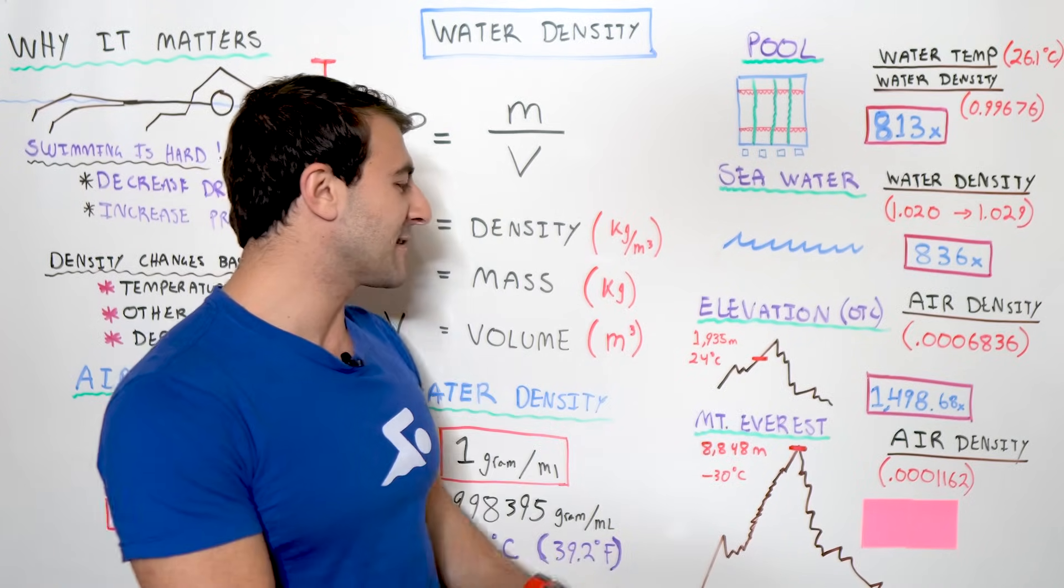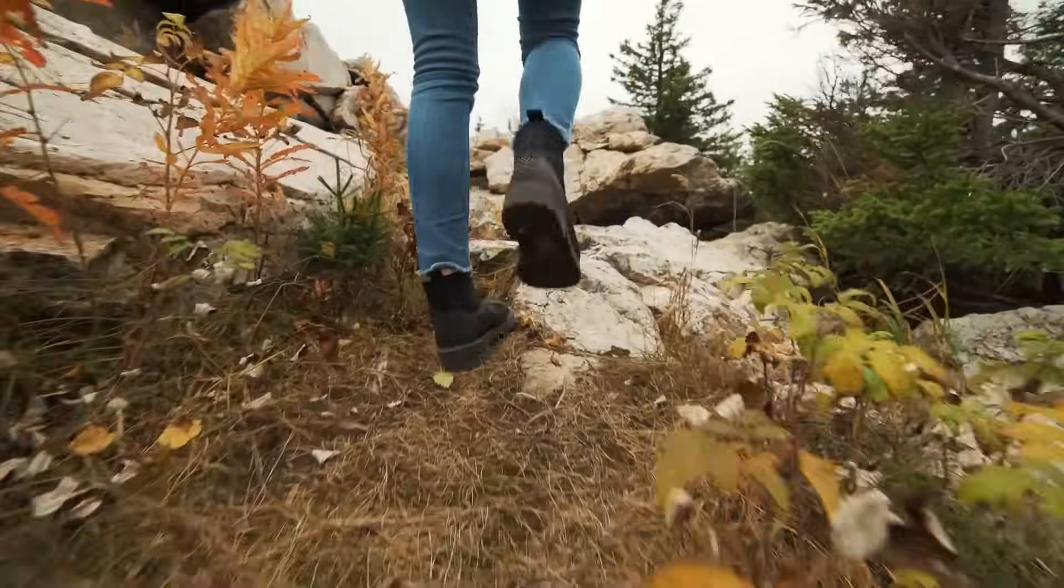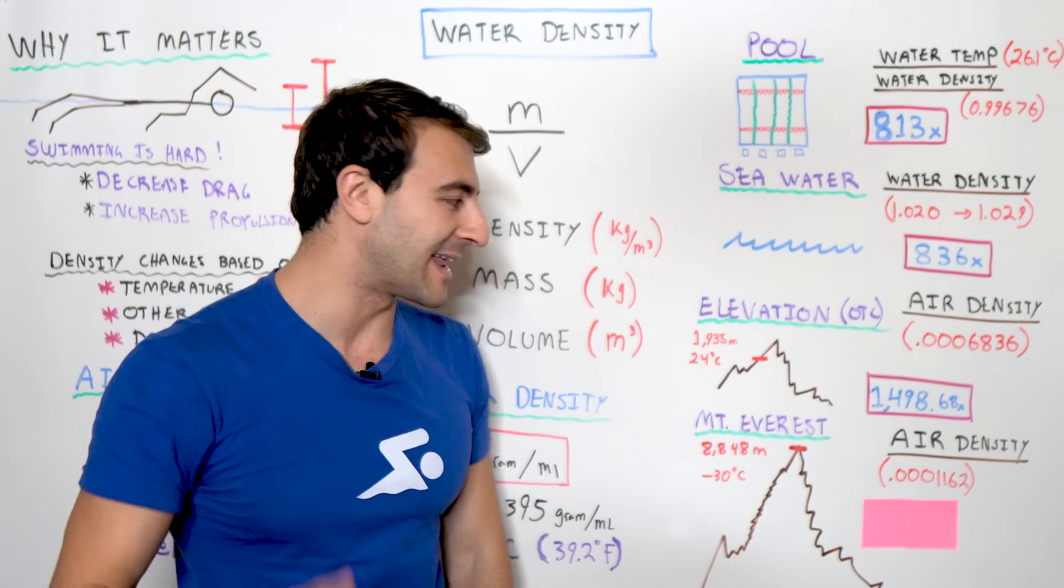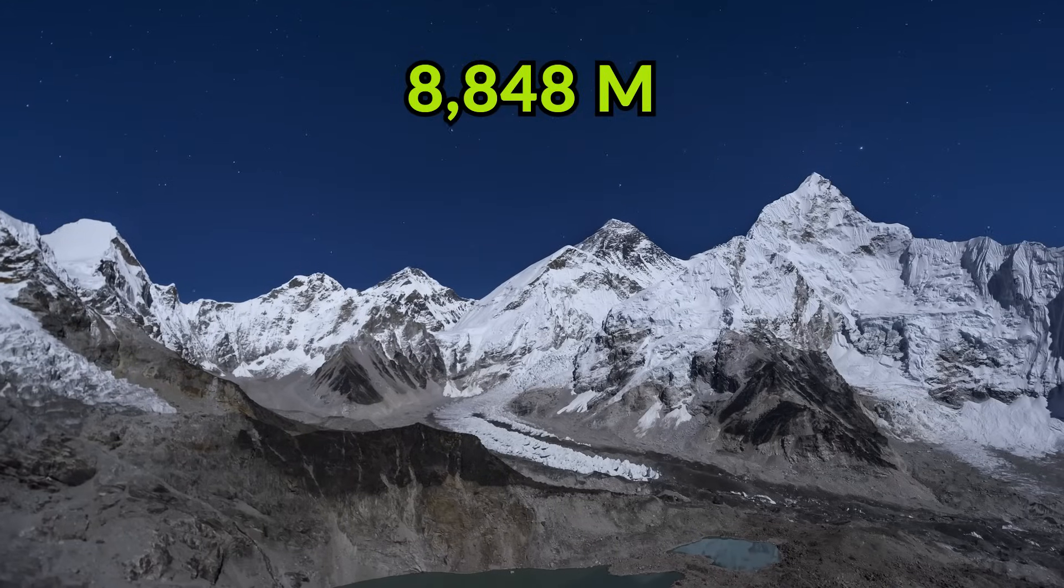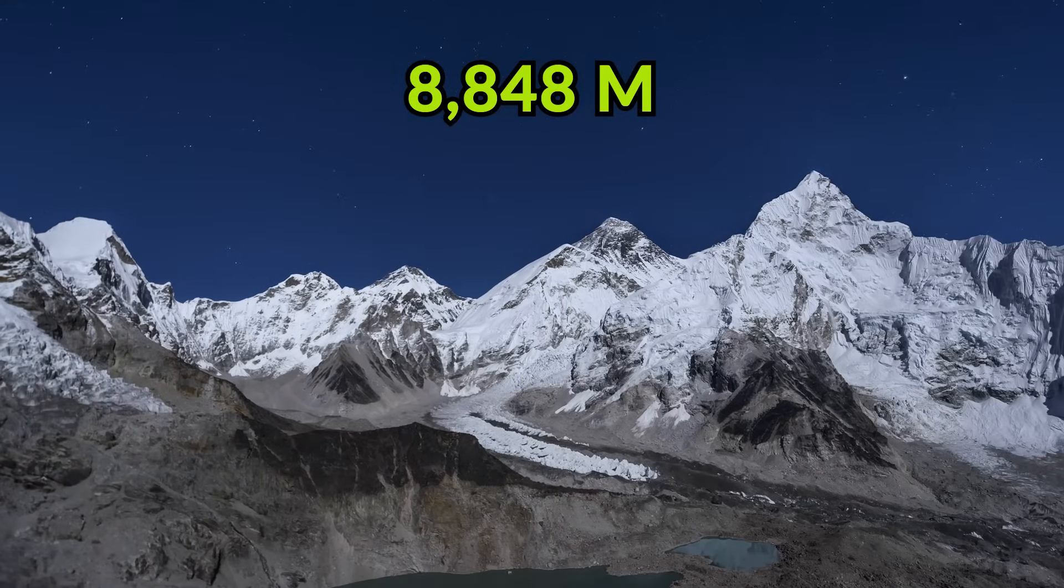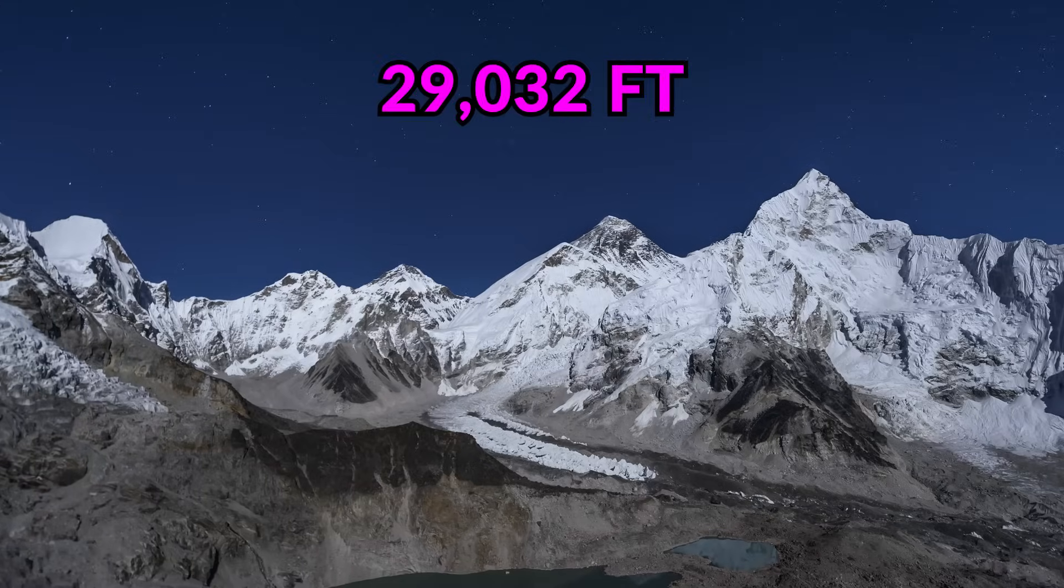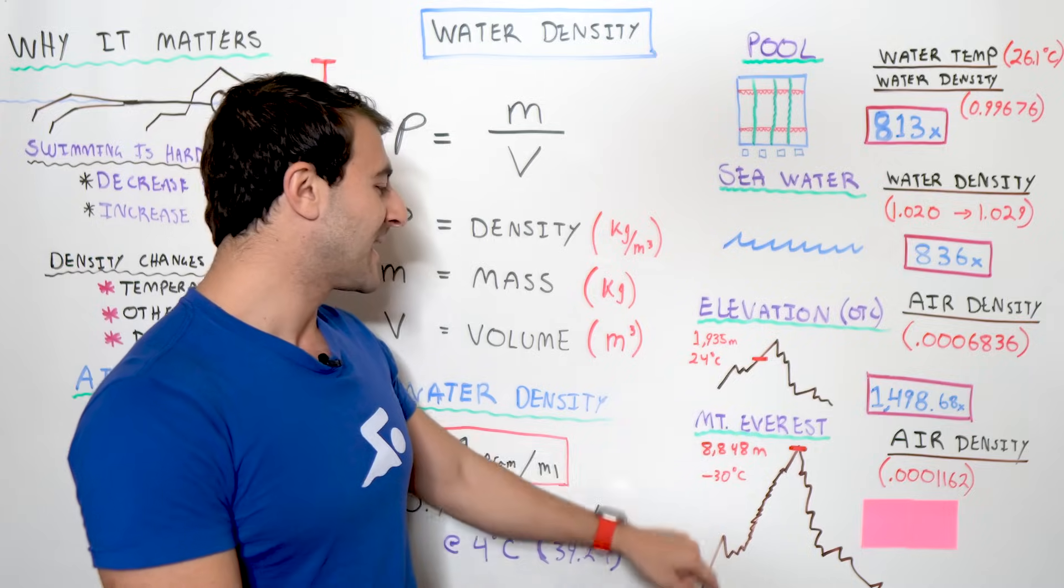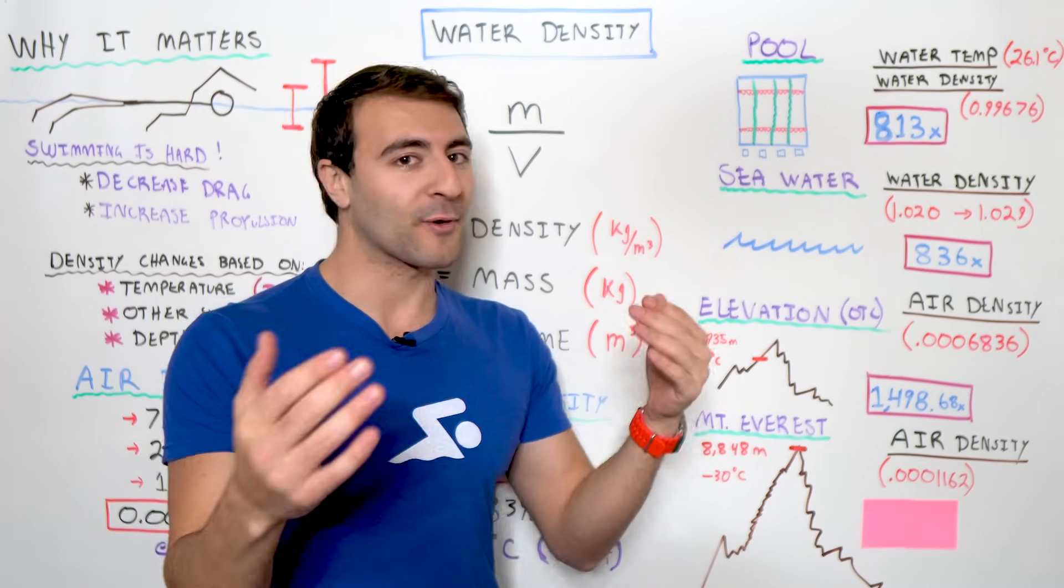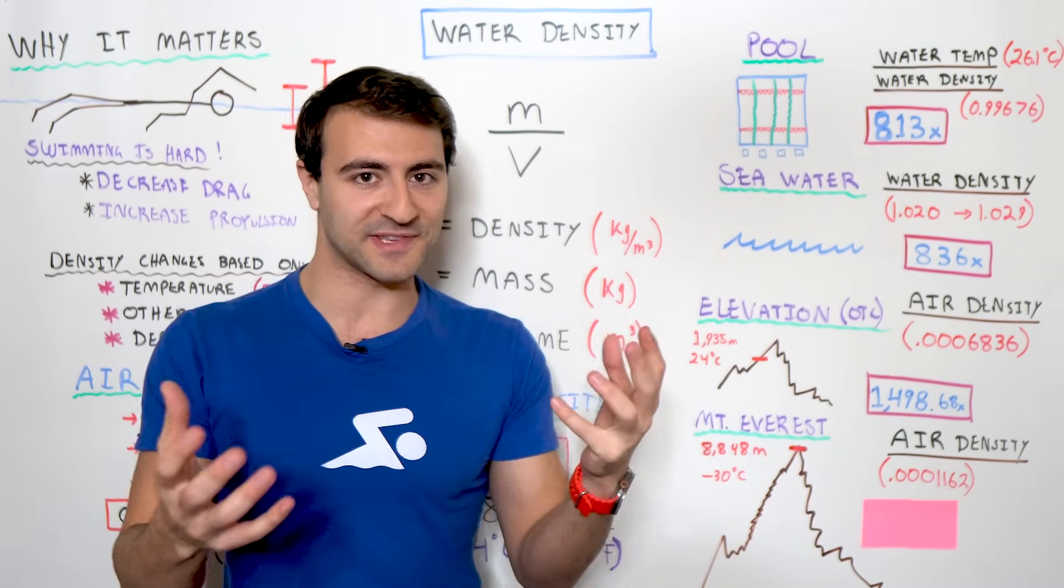Now, just for kicks and giggles, I wanted to see, well, you know what? Let's go to the highest point on the planet. And that is the top of Mount Everest, where we are at 8,848 meters high. For the US folks, it's about 29,000 feet, 29,032 to be exact.